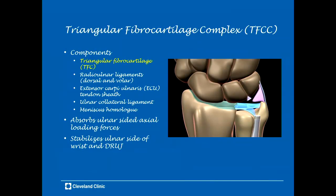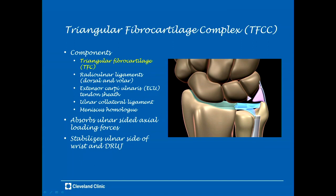MRI is really the modality of choice for evaluating disorders of the triangular fibrocartilage complex, or TFCC. The TFCC consists of several components: the main triangular fibrocartilage disc, the dorsal and volar radio-ulnar ligaments on either side, the extensor carpi ulnaris tendon sheath, the ulnar collateral ligament, and the meniscus homolog. The function of the TFCC is to absorb ulnar-sided axial loading forces and stabilize the ulnar side of the wrist and the distal radial ulnar joint.